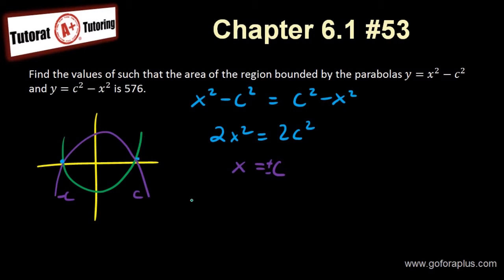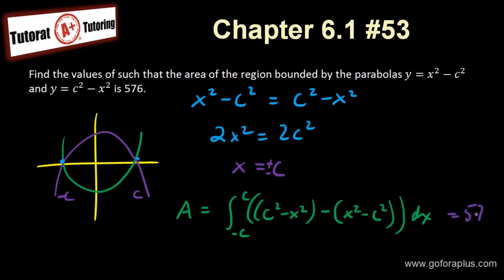So let's set up the equation here. So the area is equal to the integral from minus c to c. The function on top, which is c squared minus x squared, subtract the bottom function, x squared minus c squared. All that to be dx. So you need to evaluate this integral. And I know that this integral is going to give me equals to 576 because that's the area. That's the area in between them. So let's do that on the next page.